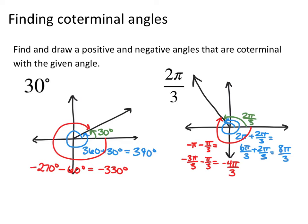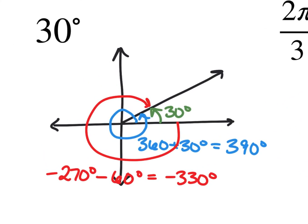To find coterminal angles — one positive, one negative — for 30 degrees: the positive coterminal angle completes a full revolution of 360 and goes 30 degrees more, giving 360 + 30 = 390 degrees. The negative coterminal angle goes the opposite direction to end at the same spot — that's 30 degrees less than 360 in the negative direction, which is negative 330 degrees.